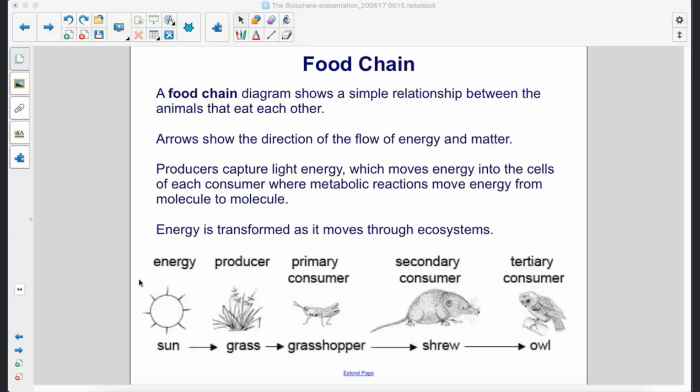A food chain diagram shows a simple relationship between the animals that eat each other. Arrows show the direction of the flow of energy and matter. Producers capture light energy, which moves energy into the cells of each consumer where metabolic reactions move energy from molecule to molecule.